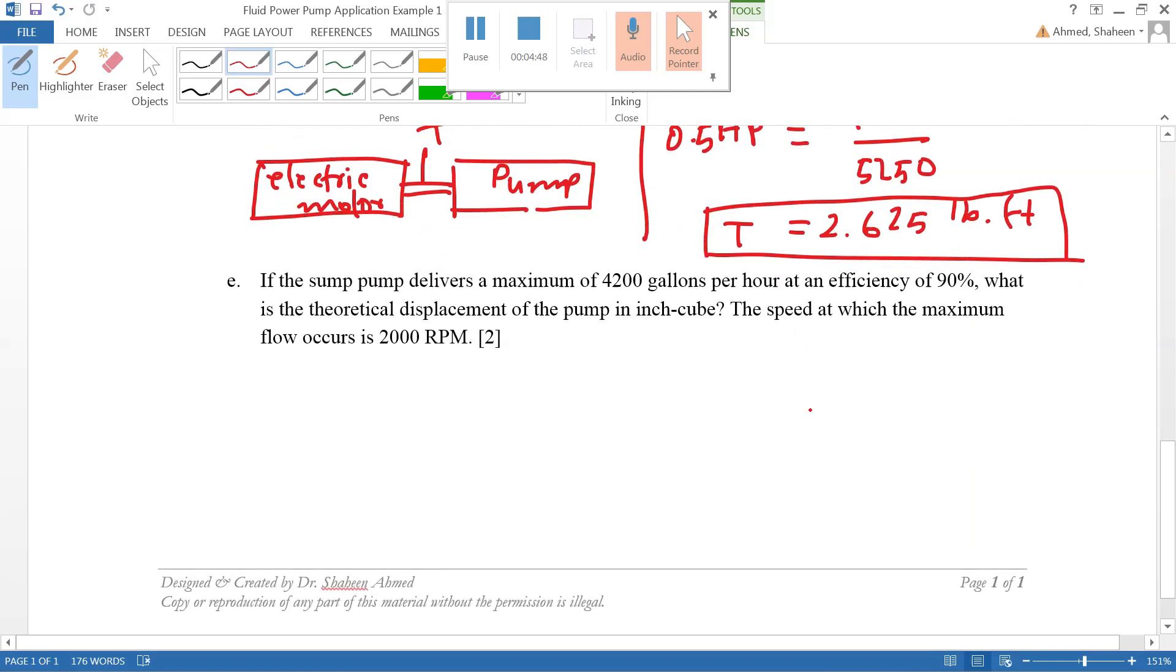Next question: if the sump pump delivers a maximum of 4200 gallons per hour at an efficiency of 90%, what is the theoretical displacement of the pump in cubic inches? We know that Q theoretical equals the volumetric displacement times the revolution. Displacement is per rev and RPM is in per minute. So if you do 4200 gallons per hour, which is the delivery, then VD which is typically in inch cubed per rev times 2000 RPM.